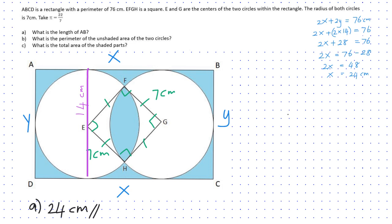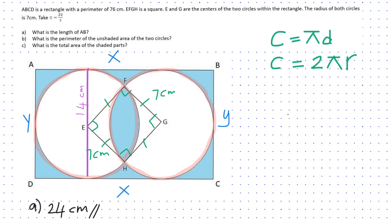Question B is: what is the perimeter of the unshaded area of the two circles? I will highlight the perimeter of the unshaded area of each circle. Observing the highlighted parts, we just need to find the perimeter of these two circles. The perimeter of a circle is its circumference.